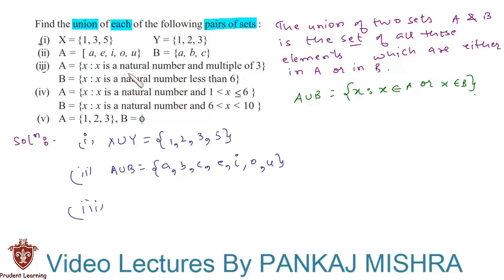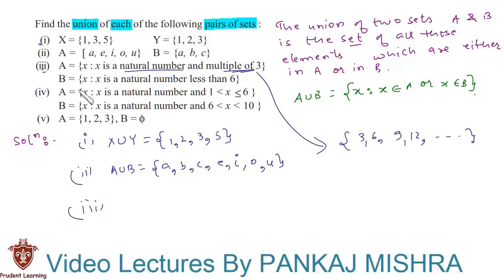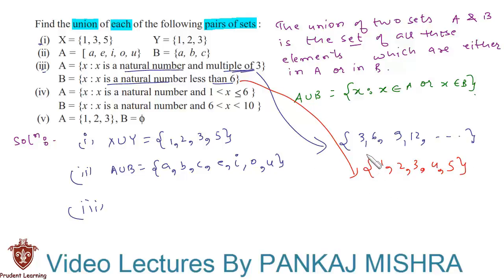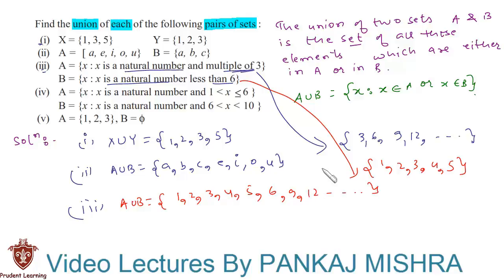In the third section, A is equal to the set of X such that X is a natural number and a multiple of 3. In roster form it will look like {3, 6, 9, 12, ...}. And B is equal to the set of X such that X is a natural number less than 6, which in roster form looks like {1, 2, 3, 4, 5}. To find the union, we write A union B is equal to {1, 2, 3, 4, 5, 6, 9, 12, ...}.